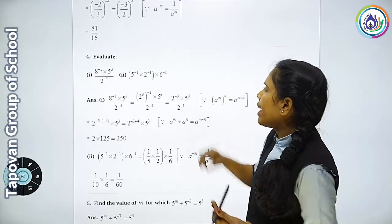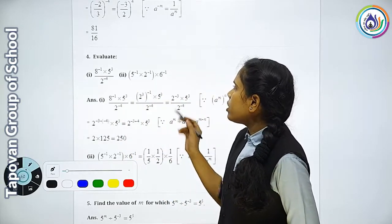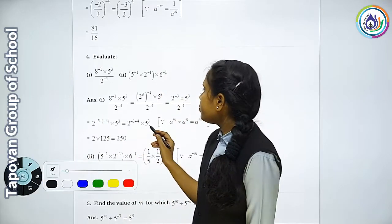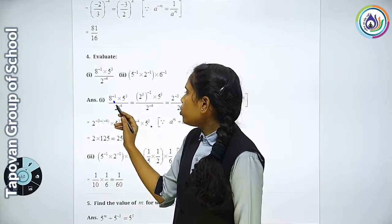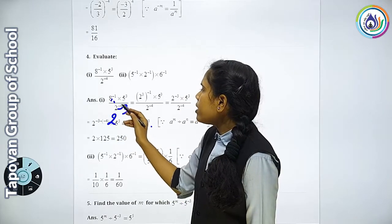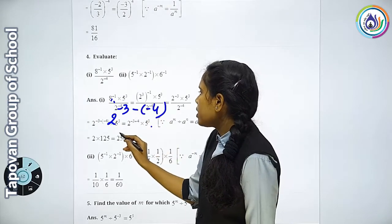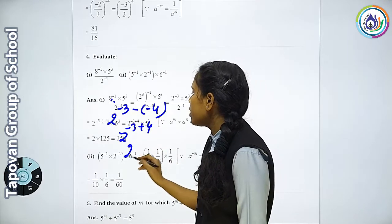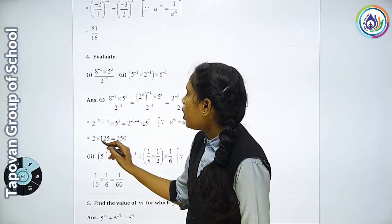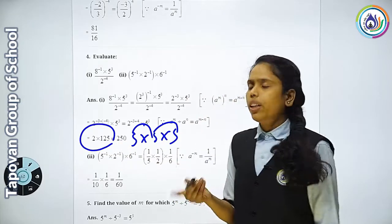Question number 4: 8 raise to minus 1 into 5 raise to 3 divided by 2 raise to 4. Start karte hain first sum. Minus 1 ye hai — isko upar le jate hain — to ye kya ho gaya? 2 raise to minus 3 cube, kyunki 8 ka cube ho gaya. Aur ye minus 4 upar aaya aapka — to minus minus plus — yaani minus 3 plus 4, kitna ho gaya? 2 raise to 1. Ye sab ho gaya. Ab bacha 5 cube. To karlijiye: 2 raise to 1 ka 2 into 5 ka cube. Kitna ho gaya? 5 fives are 25, 25 fives are 125, into 2 kiya — to kitna answer aaya aapka? 250.